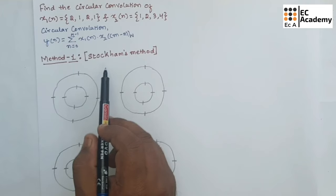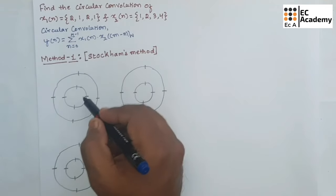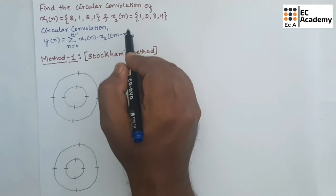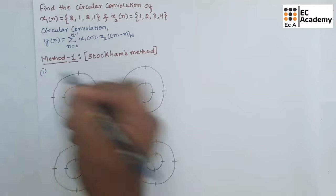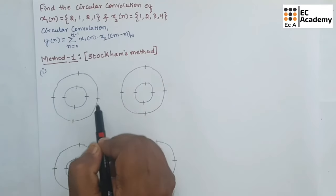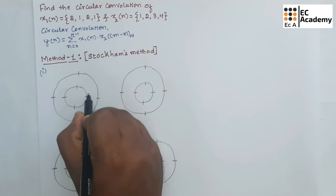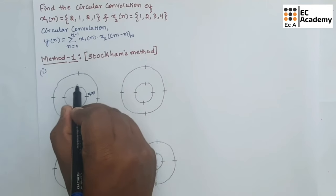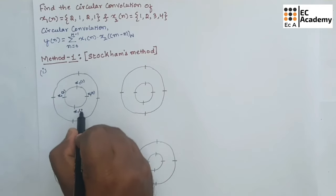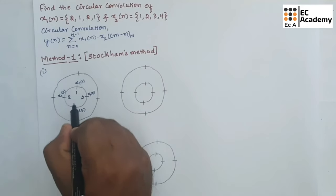Now, let us understand the first method which is Stockham's method. Stockham's method uses the circle to find the convolution of two sequences. We have used two circles here. The inner circle represents the first sequence and the outer circle represents the second sequence. Since x1 of n and x2 of n are having four samples, we have divided both the inner circle and the outer circle into four divisions. We will write x1 of 0, then move in the anticlockwise direction and write x1 of 1, x1 of 2, and x1 of 3. The values are: x1(0)=2, x1(1)=1, x1(2)=2, x1(3)=1.